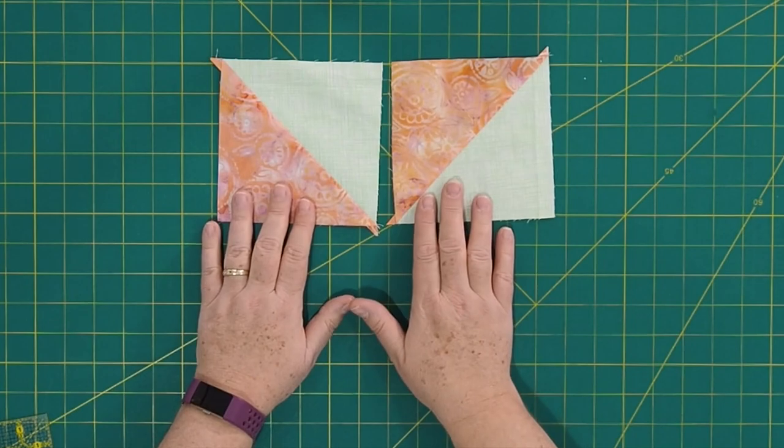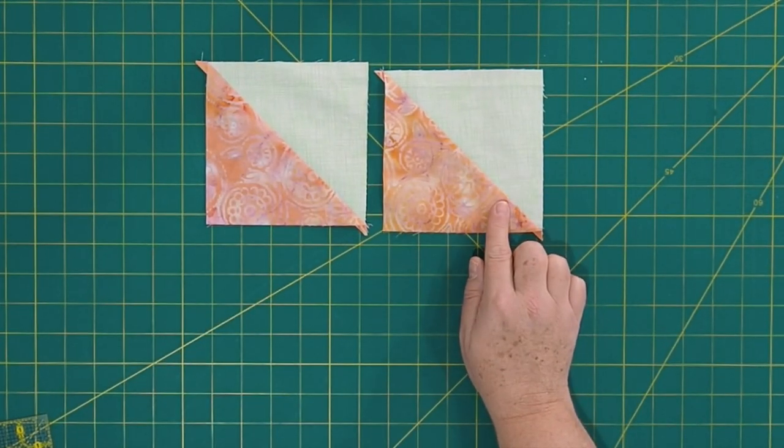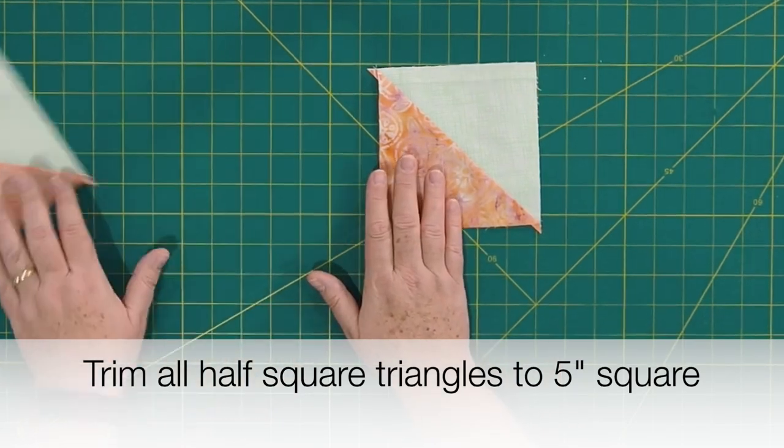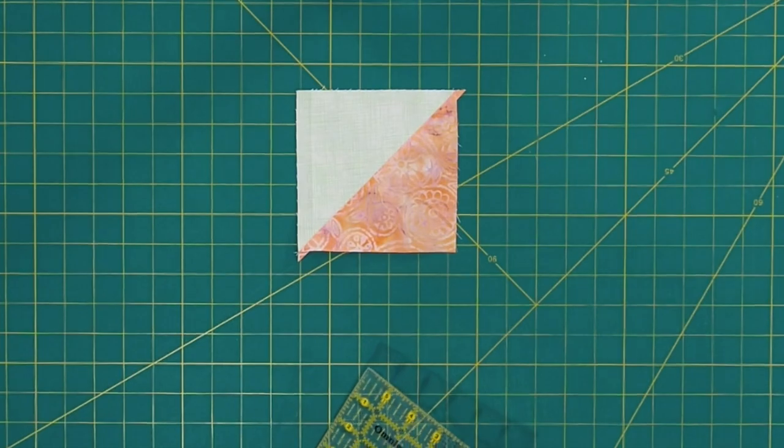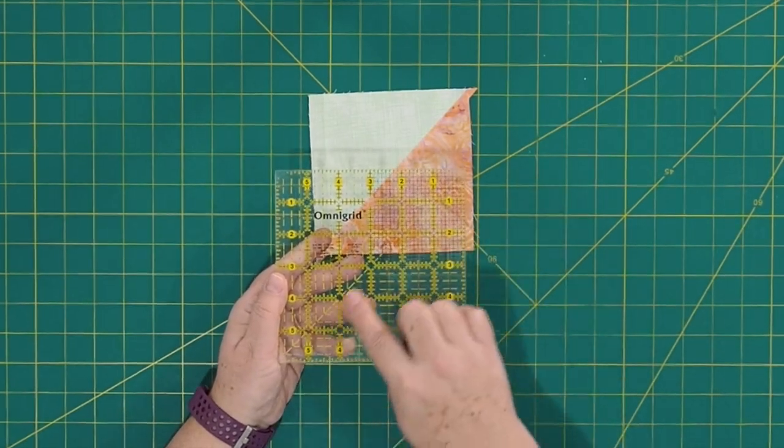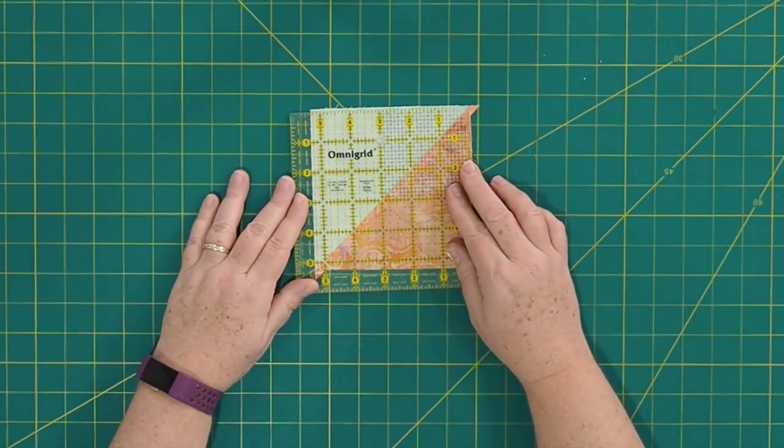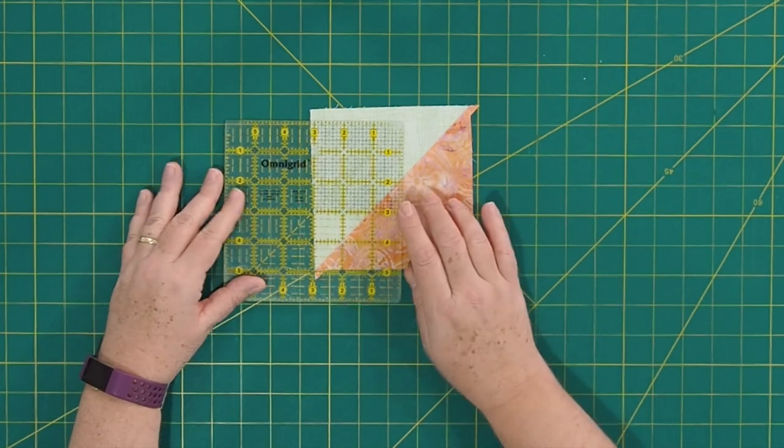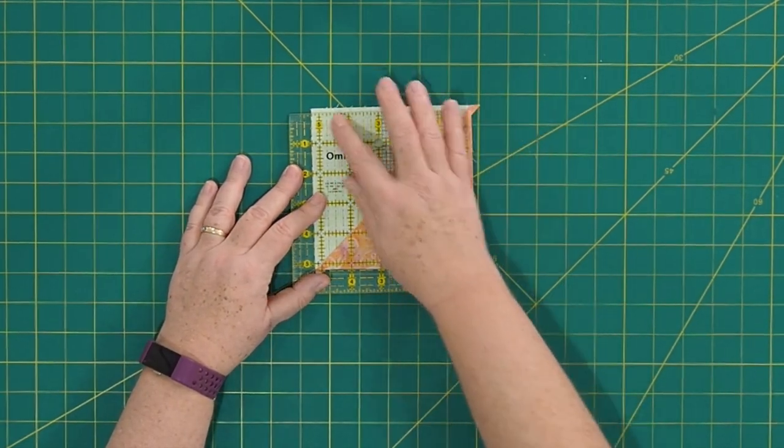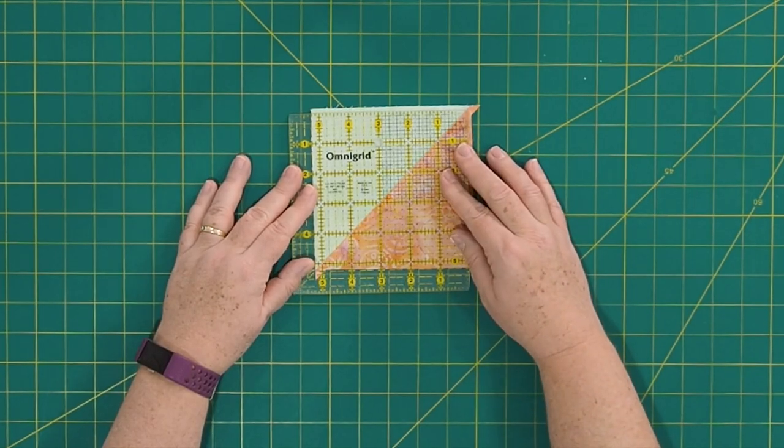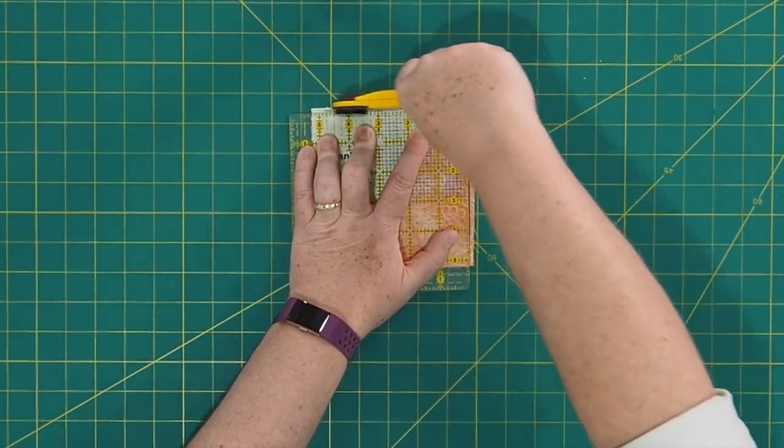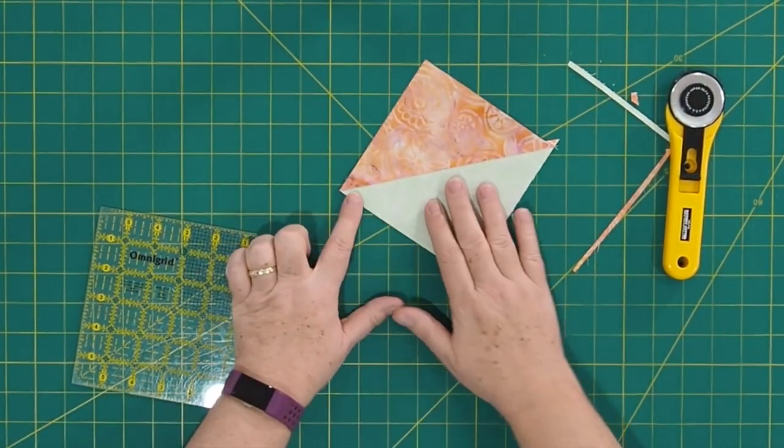All right. So here's those two squares sewn together and then split in half and pressed open. The last thing we need to do before we're ready to piece this block together is trim all of your half square triangles down to five inches square. So I'm going to show you how to do that with one of them. And you're going to need a ruler with, it doesn't matter what size, it will have to be at least five inches, but with that nice diagonal line printed on it that will help you line up this block.